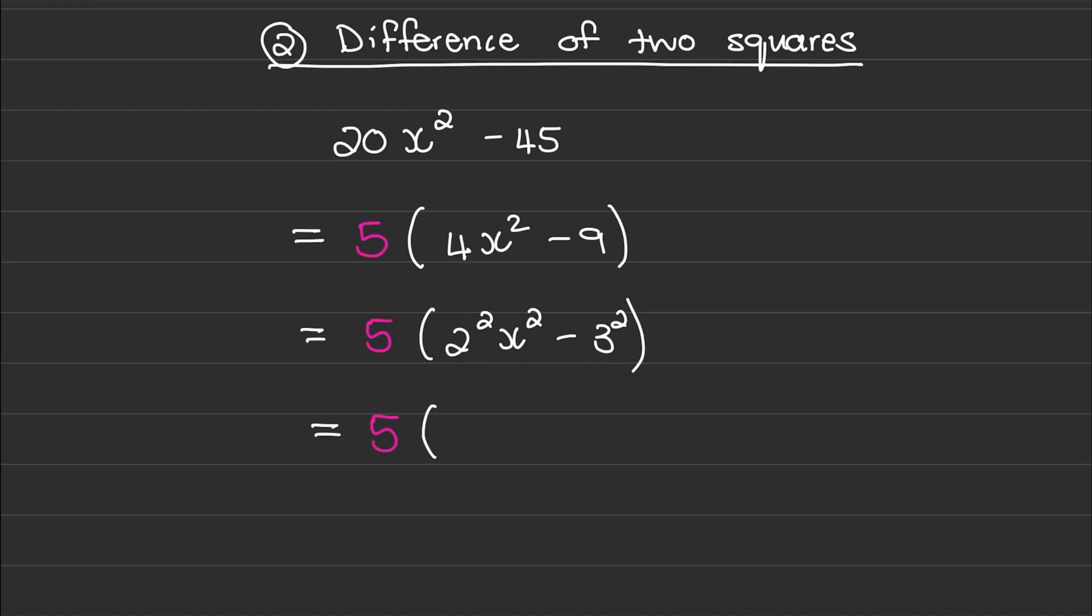When I factorize, I'll create two sets of brackets. I'll take 2 and x, write it in my first bracket, and 2 and x in my second bracket. Then 3 in my first bracket and 3 in my second bracket, and place different signs inside both brackets.